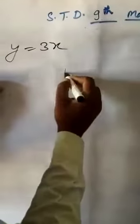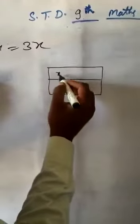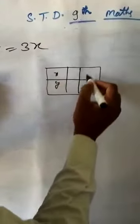Next question. y equal to 3x. Draw the graph y equal to 3x. Prepare a table and corresponding value of x and y. Minimum 3 values.